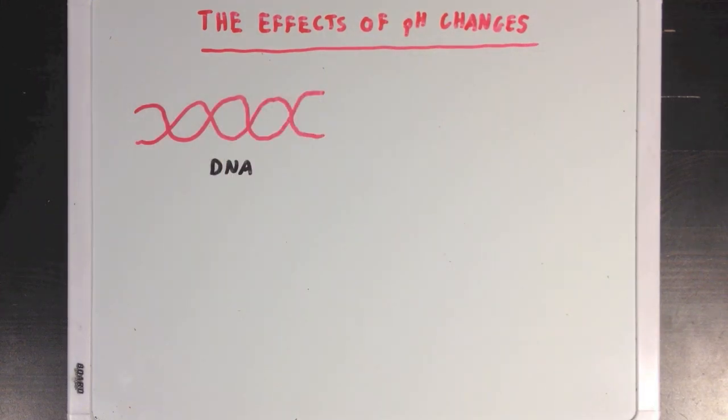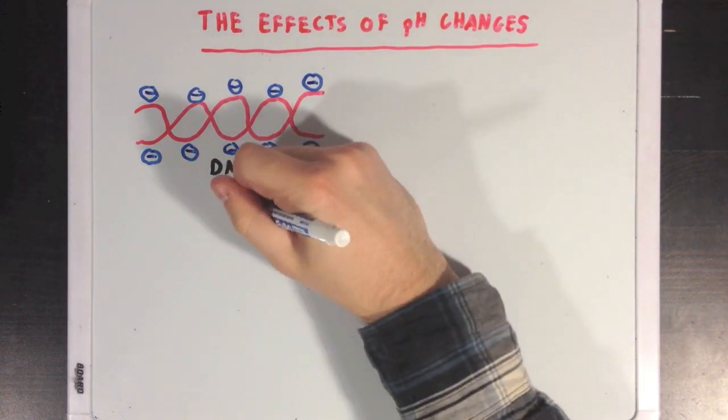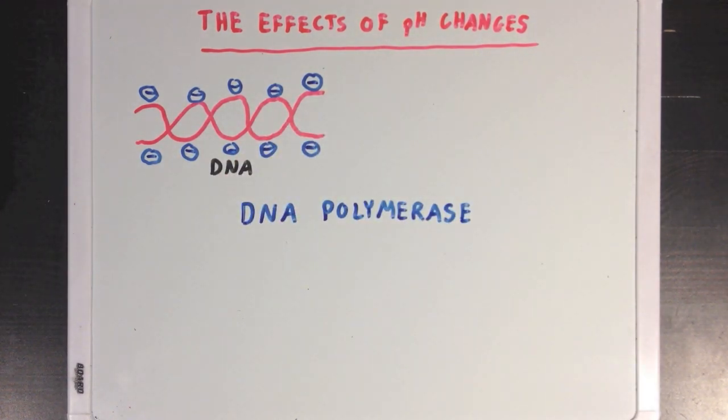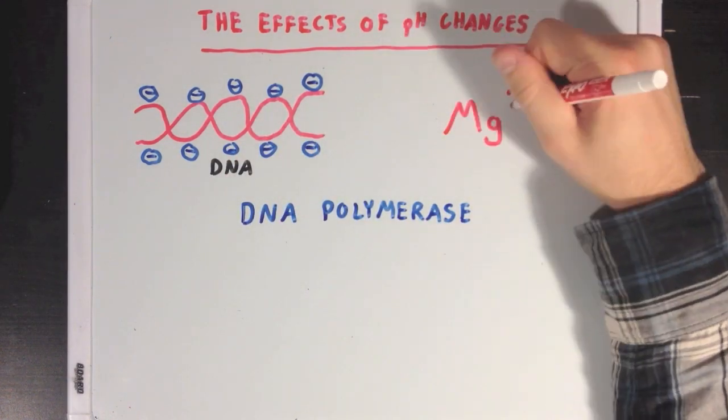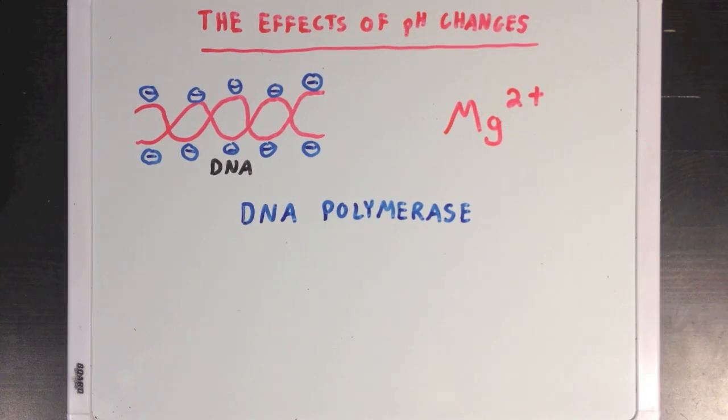Remember that DNA is a very negatively charged molecule because of all the negatively charged phosphate groups you'd find on DNA. In order for the enzyme DNA polymerase to help out with DNA replication, it binds a magnesium ion cofactor, which it uses to stabilize all the negative charge on DNA.